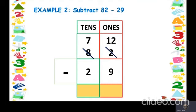Now I can easily subtract 12 and 9. Let's count from 9 to 12: 10, 11, 12 — so I get 3. Now for the tens column, count from 2 to 7: 3, 4, 5, 6, 7 — so I get 5. The final answer is 82 minus 29 equals 53.